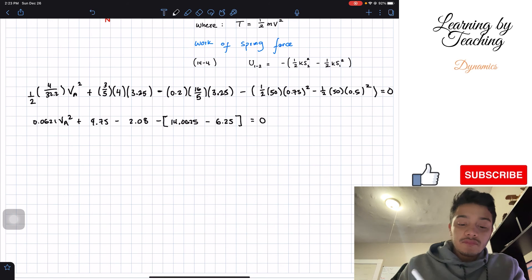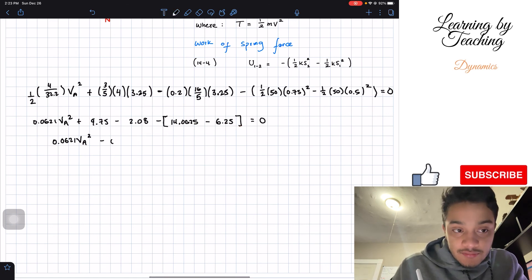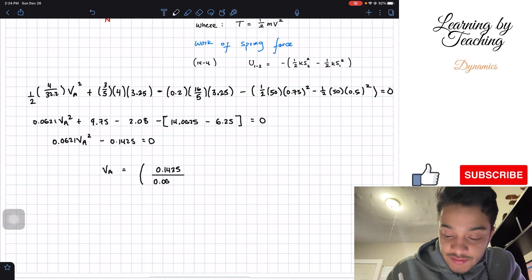Okay. So I'm going to do this. The one with our variable I'm going to leave it still. And we're going to apply all this addition. So after we add all of them, we have a total of negative 0.1425. And this is equal to 0. Therefore we're going to solve for v_A. It's going to be equal to, and we're going to have 0.1425 divided by 0.0621.